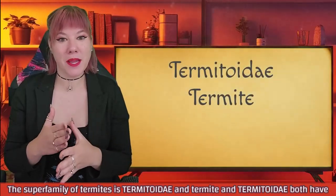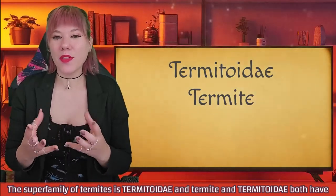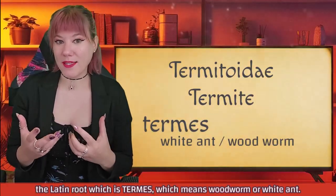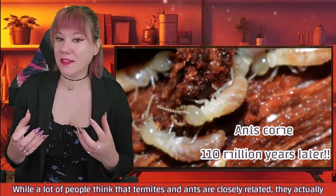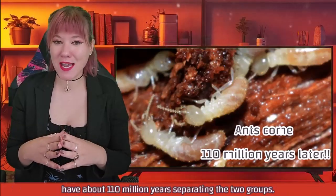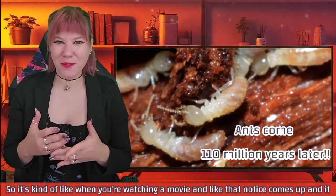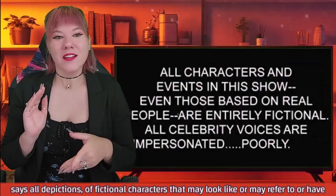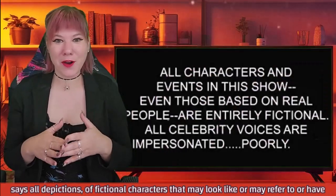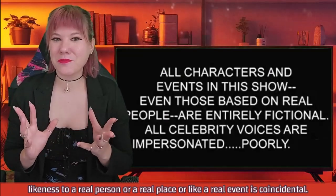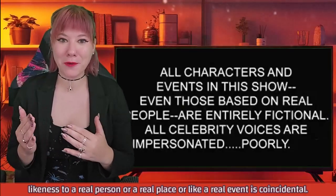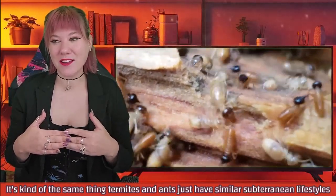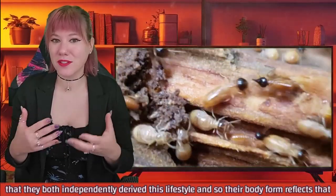The superfamily of termites is Termitoidea, and termite and Termitoidea both have the Latin root termites, which means woodworm or white ant. While a lot of people think that termites and ants are closely related, they actually have about 110 million years separating the two groups. It's kind of like that notice that comes up in a movie saying all depictions of fictional characters that may look like, or may refer to, or have likeness to a real person or place or event is coincidental — termites and ants just independently derived similar subterranean lifestyles.